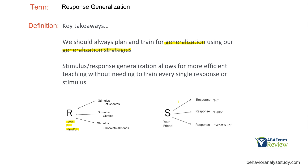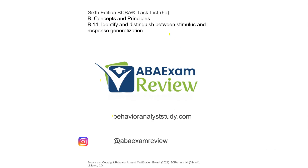If you can start to see both stimulus and response generalization occurring naturally, you're doing a great job as a practitioner. People often wonder how they know if they're effective — if you're seeing generalization, there's a good chance you're doing something right. Don't be intimidated by stimulus and response generalization. If you just ask yourself: am I looking at multiple stimuli or multiple responses, it becomes a lot easier.